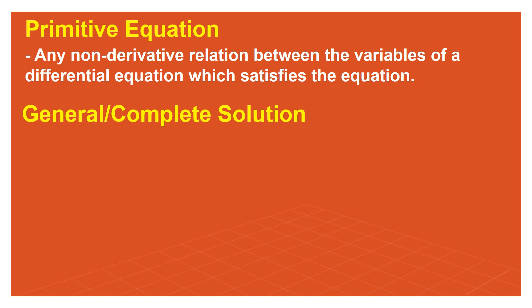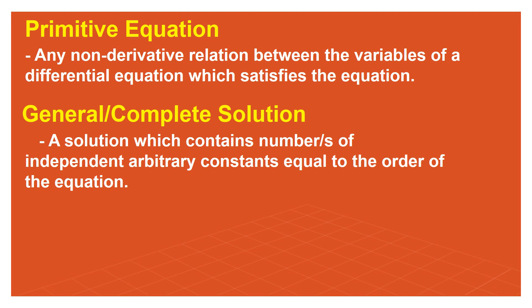The general or complete solution is a solution which contains a number of independent arbitrary constants equal to the order of the equation. The number of times we differentiate depends on how many independent arbitrary constants are present. If we do not know the count of independent arbitrary constants, we cannot obtain the correct differential equation or its order.